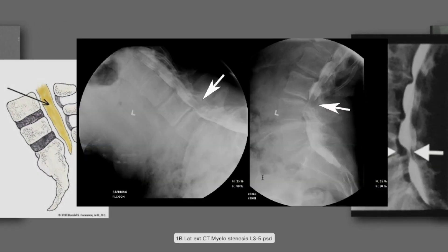This is a myelogram lateral x-ray view of the lumbar spine of a patient who has significant central stenosis at L3-4. This is a great view to indicate what happens on flexion versus extension. If you look carefully in this area, you'll see dye that flows from the top of L3 down below L4, and that dye pattern disappears completely in a cutoff sign when the patient extends — a good indicator of what happens in the spine with flexion versus extension in the face of stenosis.